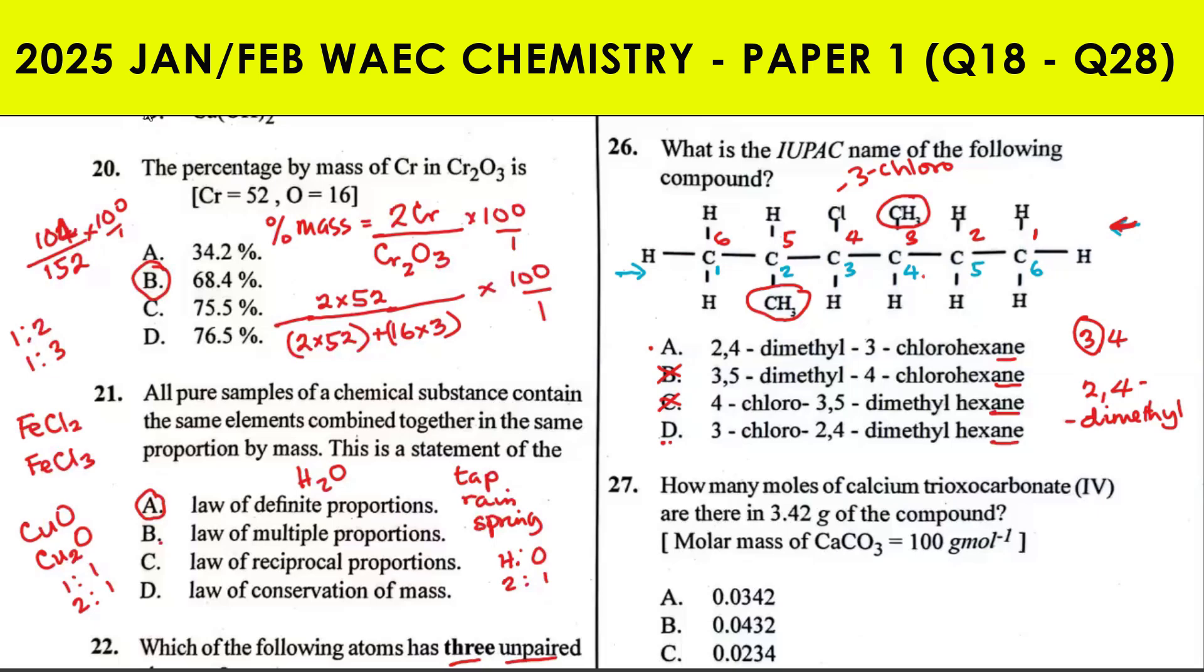It's not C before D, but C before M. This 'di' prefix here does not affect the alphabetical order - is that understood? That's why the correct answer is 3-chloro-2,4-dimethyl hexane, even though 2 is lower than 3. The correct answer is D.